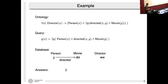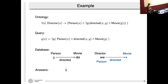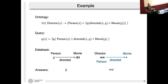In a standard classical database setting, the only person we know to have directed a movie is Jim Jarmusch, so that would be returned. But if we take into account the knowledge formalized in the ontology, then we know Wim Wenders must also be a person and must have directed some movie — we don't know its identity, introduced by the existential quantifier — so Wim Wenders is returned as an additional answer. This is the general idea: you add knowledge to your data via an ontology to get more complete answers when your data is incomplete.